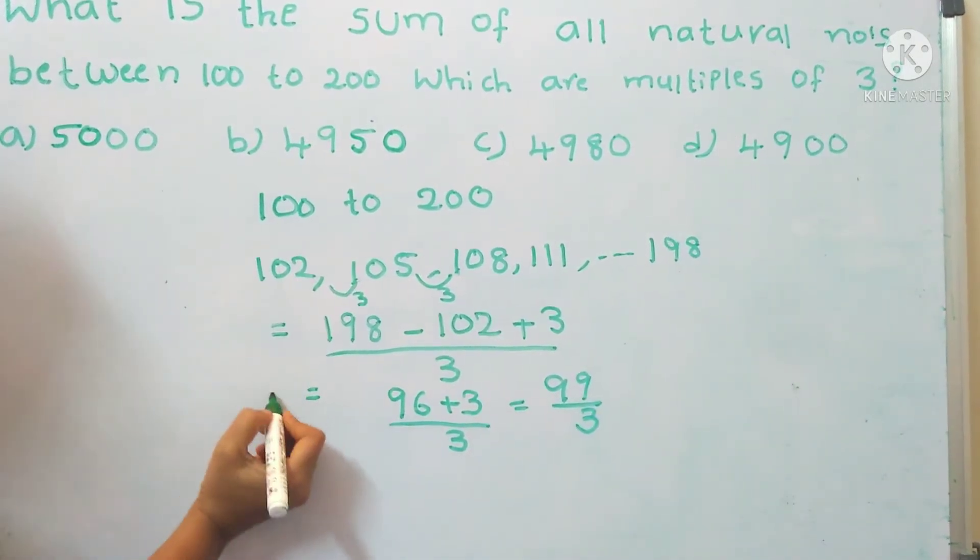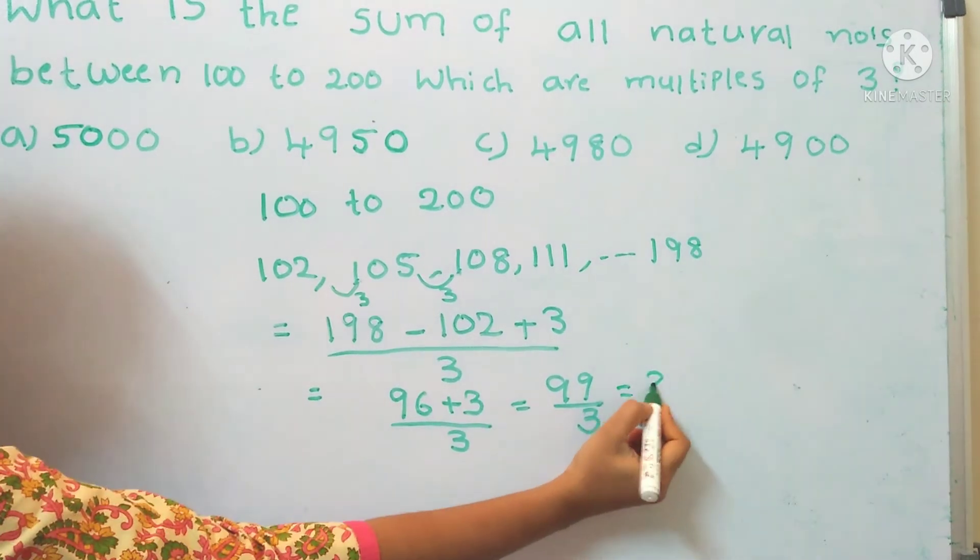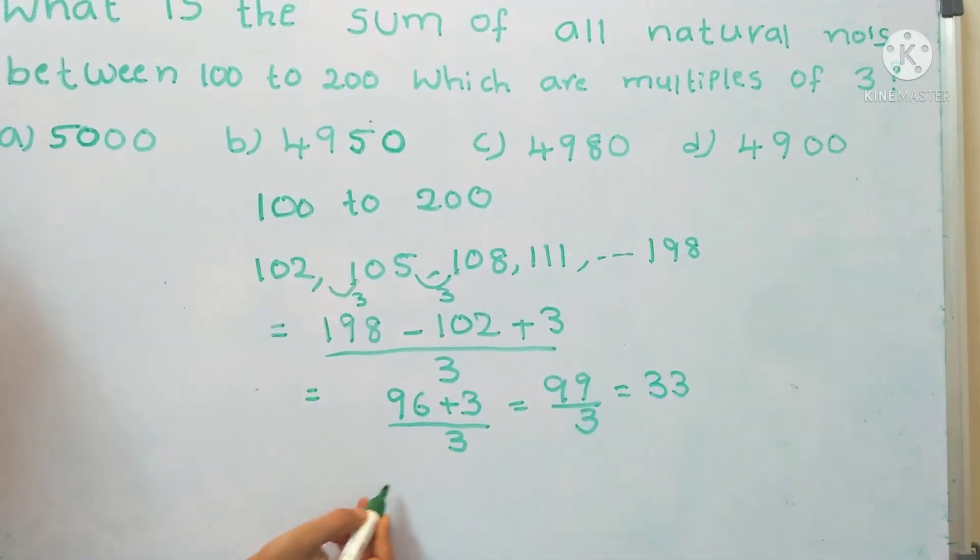So it is 99 divided by 3, that is 33. So the number of terms n equals 33.